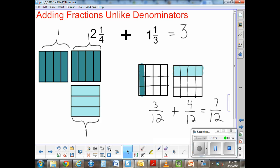So three plus four equals seven. My denominator stays the same. And now all I do is add that seven twelfths to my three wholes, and my final answer is three and seven twelfths.